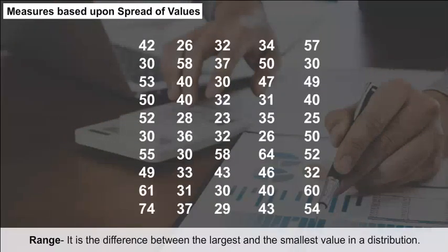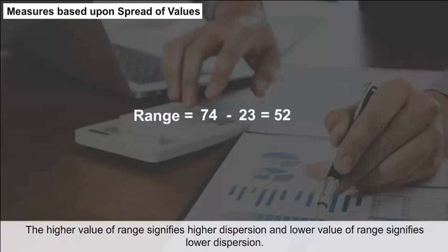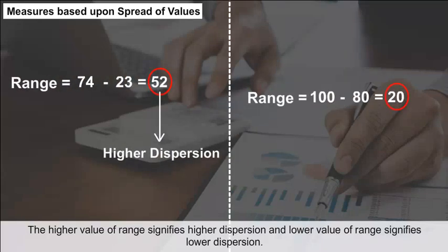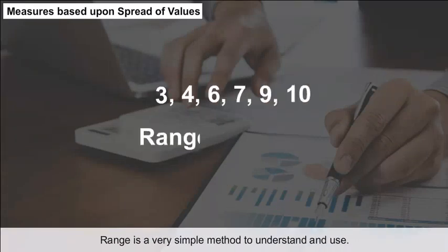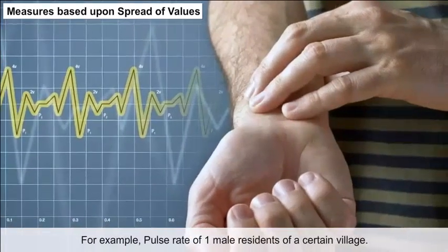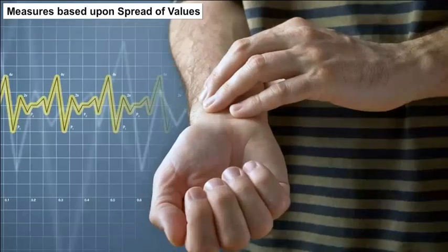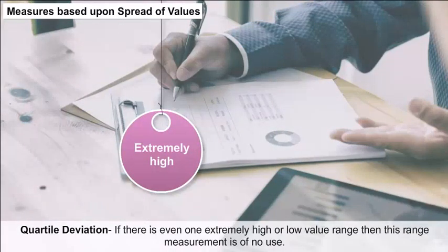Range is the difference between the largest and smallest value in a distribution: R = L − S. A higher value of range signifies higher dispersion. Range is a very simple method to understand and use. For example, consider the pulse rate of male residents of a certain village.